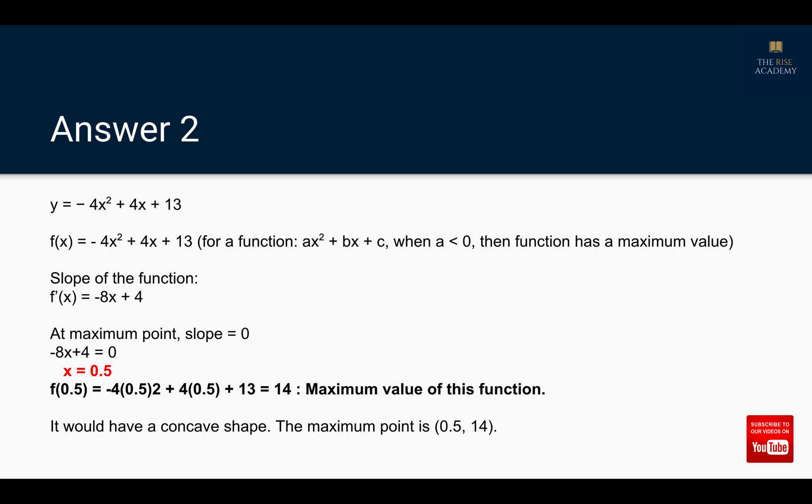To find that maximum value, we take the slope of our function. f'(x) = -8x + 4. We know that at the maximum point the slope is 0, so -8x + 4 = 0, which gives us x = 0.5. If I put 0.5 in my equation, it gives me the highest value for that function, which is 14. This function will have a concave shape and the maximum point is at (0.5, 14).